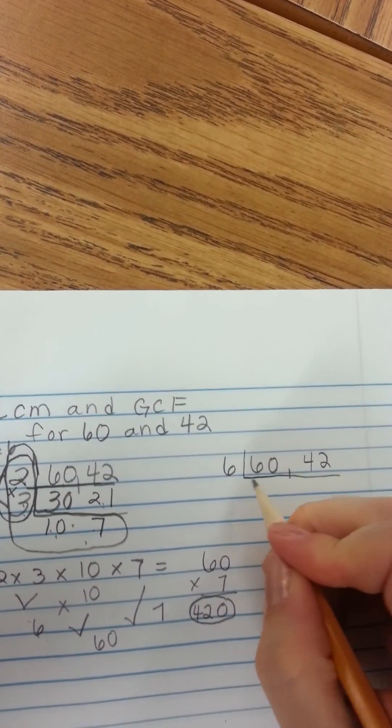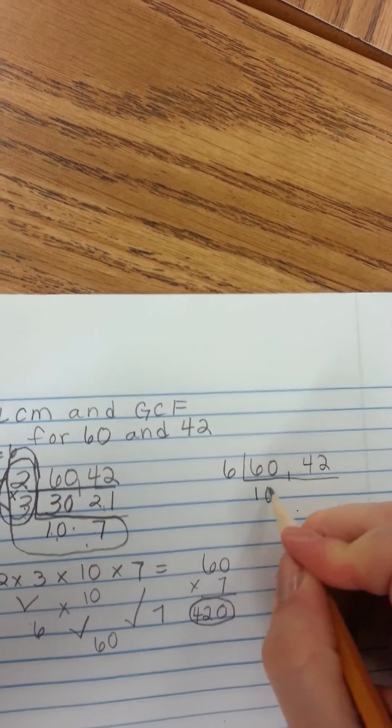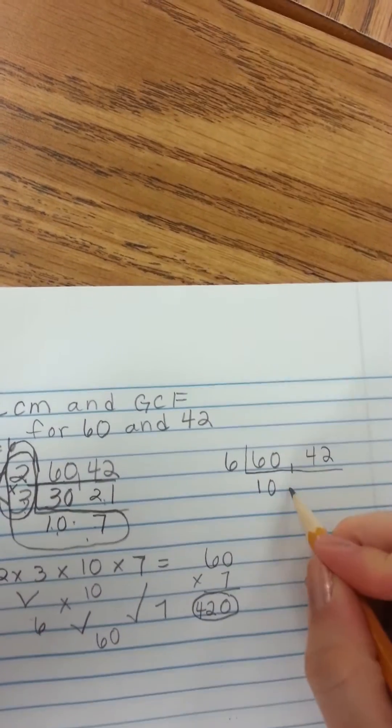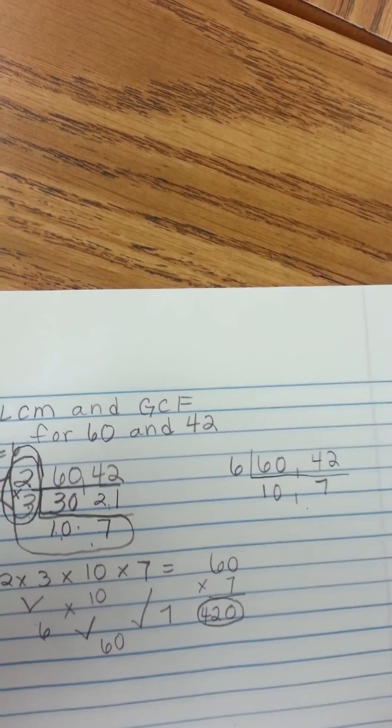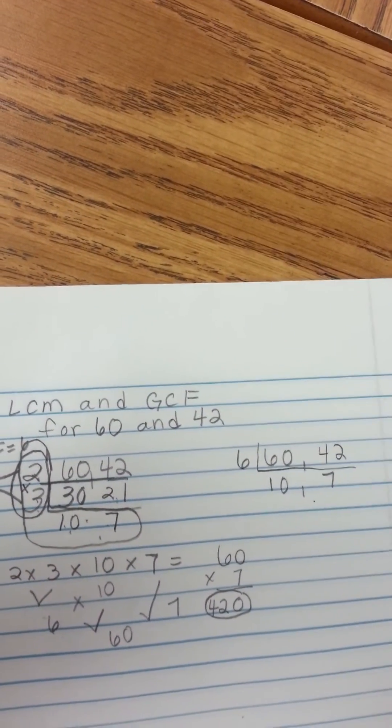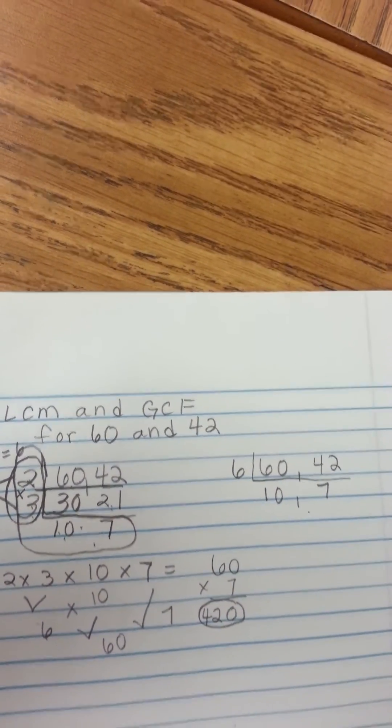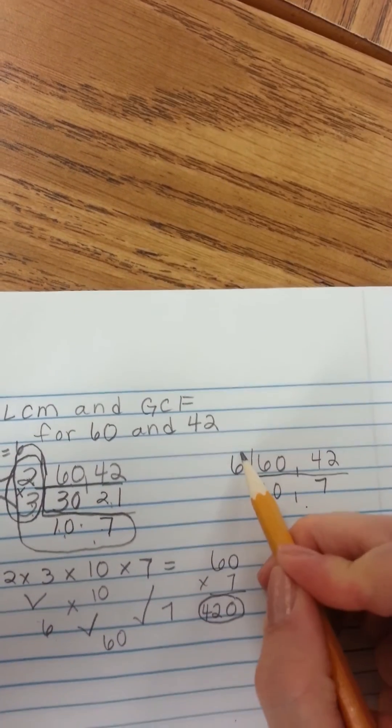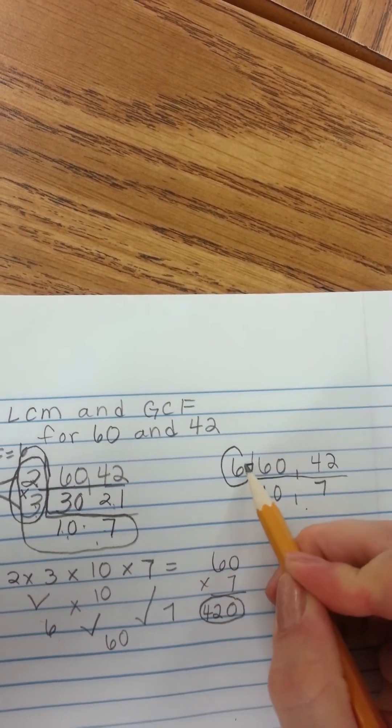So 6 goes into itself, into 60, 10 times. And 6 goes into 42, 7 times. Okay, well, 10 and 7 don't have any other common factors. So I'm done with my bobsled. So, 6 is going to be my GCF, my greatest common factor.